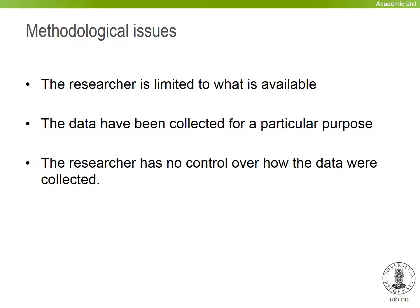There are some methodological issues involved. The researcher is limited to what is available and cannot supplement with their own research. The data has been collected for a particular purpose, which may be slightly different from the purpose you are using the data for. The researcher has no control over how the data were collected, and this is a big methodological issue — you cannot really say much about the validity of the data. You have to trust the arguments and documentation of the person or team who did the primary research.